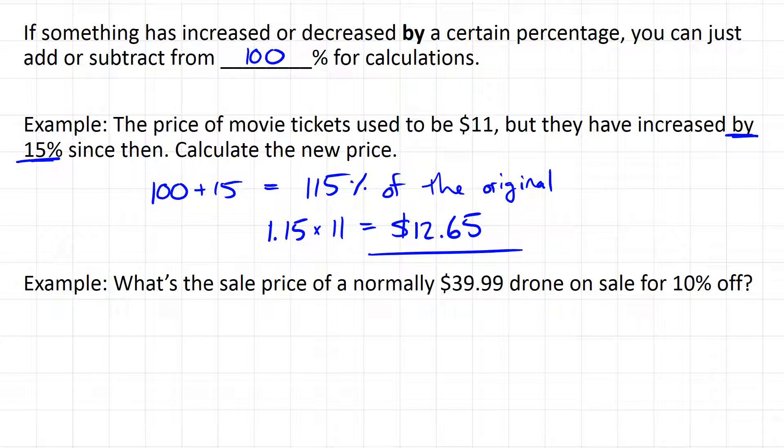Here's a second example where we're going to decrease by a certain amount. So a drone that's normally $39.99 is on sale for 10% off. So that means that if the original price was 100% of the price, we're going to drop it by 10, that's 90% of the original. So to find the new price, it's going to be 0.90 times $39.99. And when I do that, I get a dollar value of $35.99.